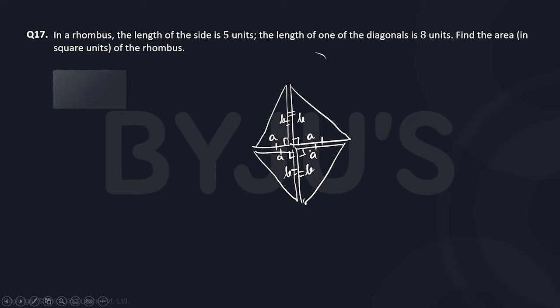Now, as per the question, it's given to us that this length is five, and let's say this diagonal is eight. If this diagonal is eight, so this b turns out to be four.